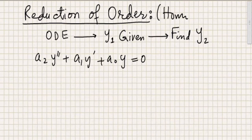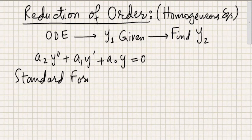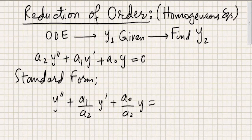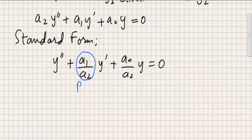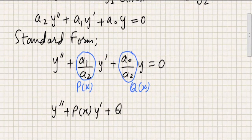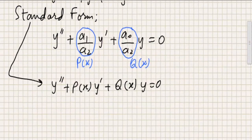By the way, this method is only for homogeneous equations. So I'm going to define a new standard form, achieved by dividing the entire equation by a2, which is the coefficient of the leading term. Once I get this equation, I'm going to name different terms: a1 over a2 as p(x), and a0 over a2 as q(x). So I rewrite the equation as y'' plus p(x)·y' plus q(x)·y equals zero. This will be our standard form for this method.